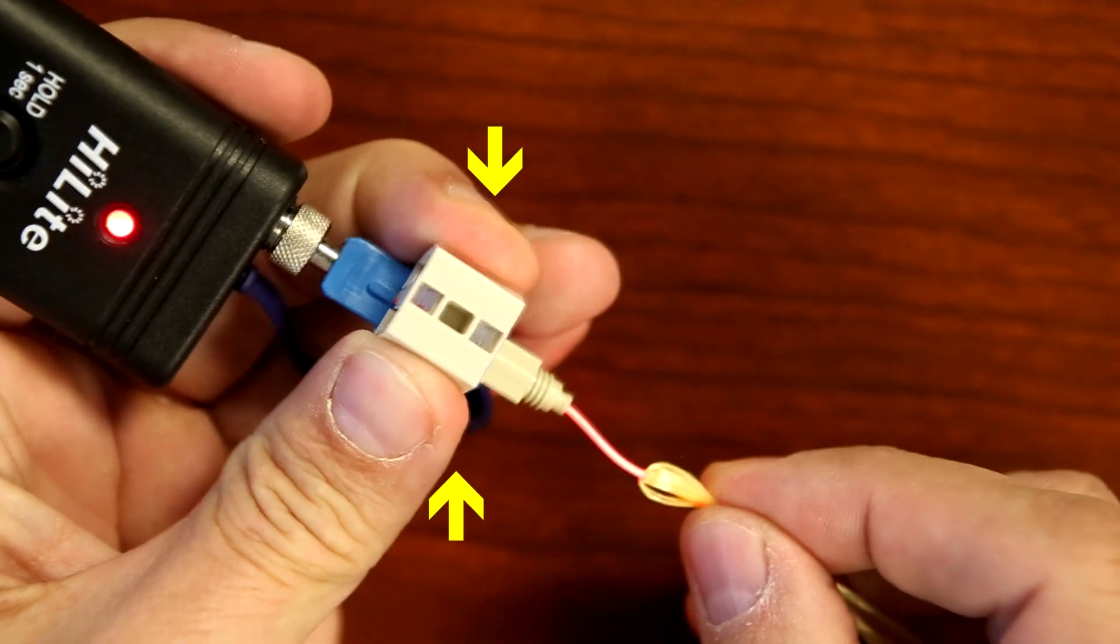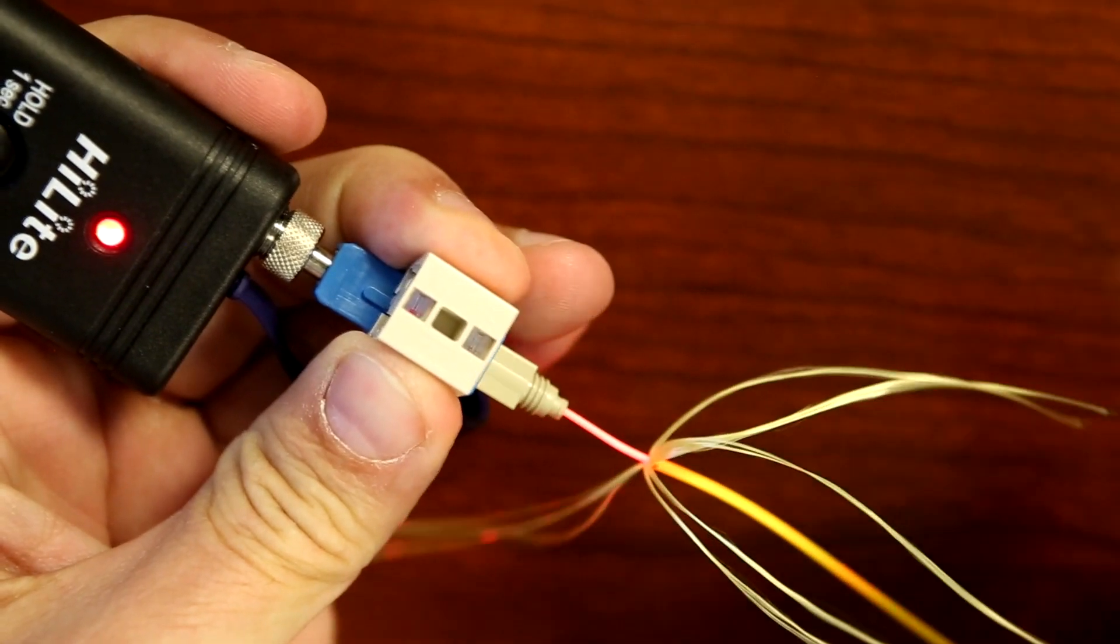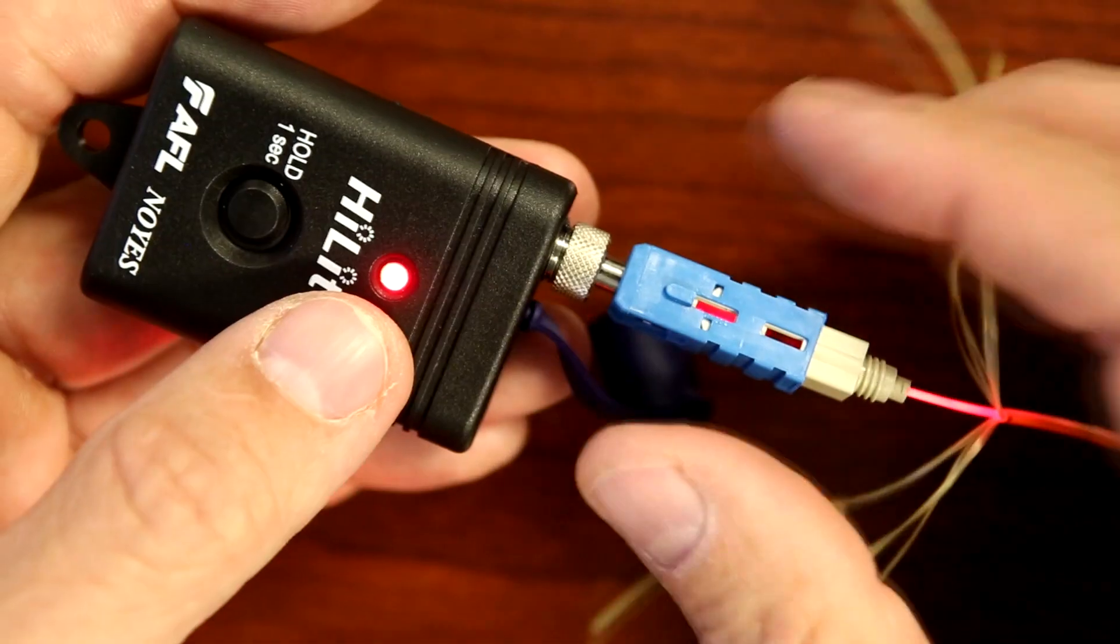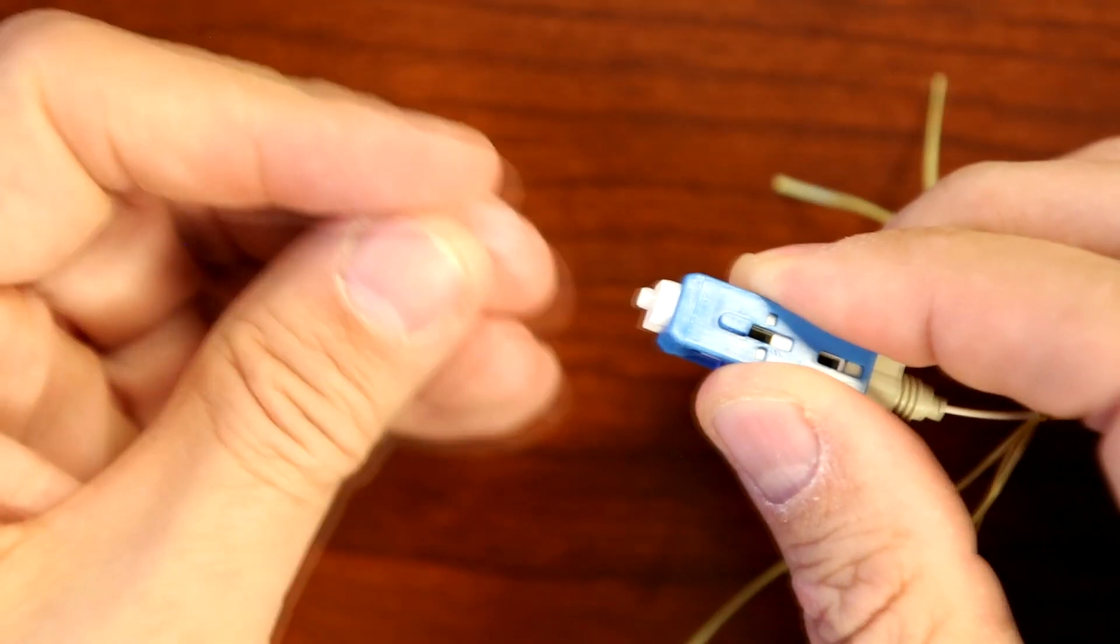Squeeze both sides of the wedge clip to activate the splice. Then remove the wedge clip. Remove the VFI and reinstall the dust cap.